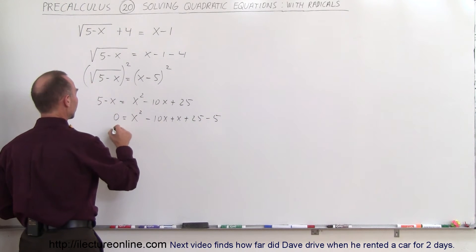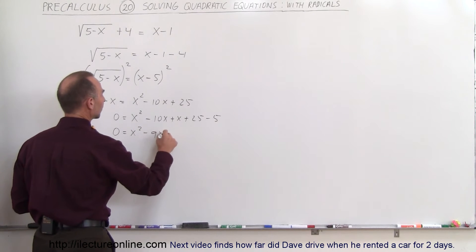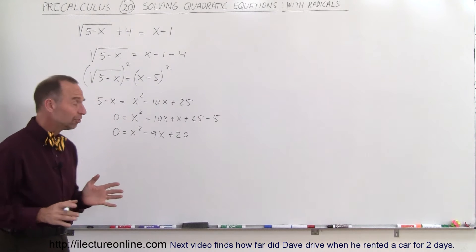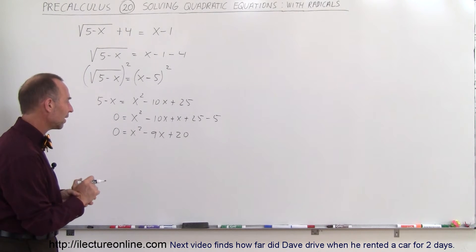Combining like terms, we get 0 equals x squared minus 9x plus 20. Now at this point, we may want to try to factor that, see if that's possible.